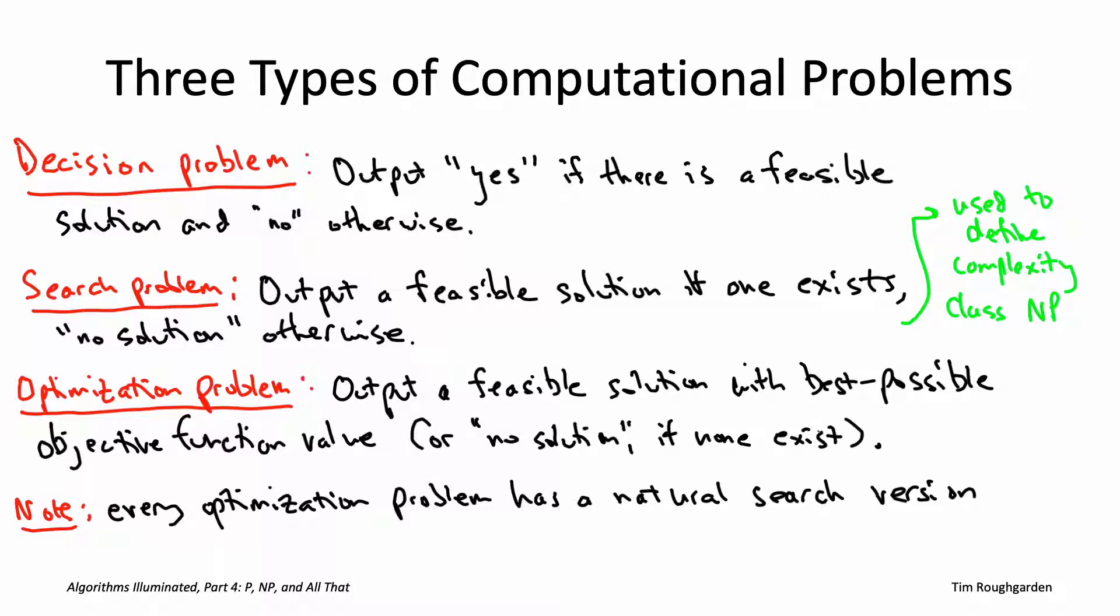The search problem would be, for example, if there's a traveling salesman tour with cost at most 1000, give me one, otherwise correctly report that no tours of that quality exist. Or in the knapsack problem, you would say give me back a collection of items with total value at least 10,000 or correctly report that no such subsets of items exists.